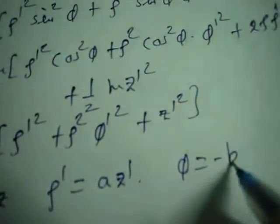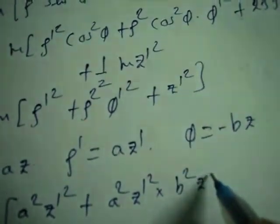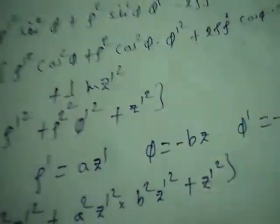From the constraints rho equal to az, we get rho-dot equal to a z-dot, and from phi equal to minus bz, we get phi-dot equal to minus b z-dot. Substituting, we get T equal to half m z-dot squared times (a squared plus a squared b squared z squared plus 1).